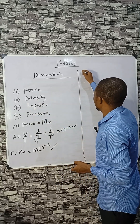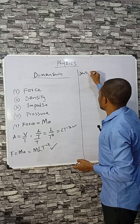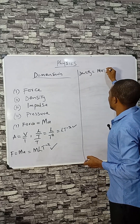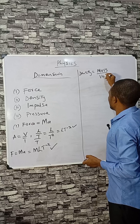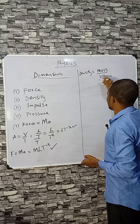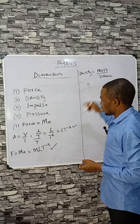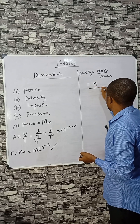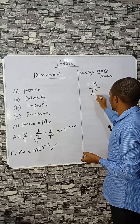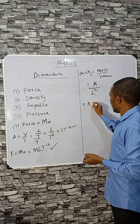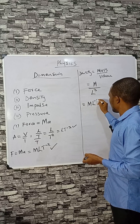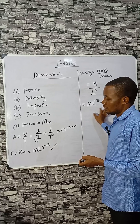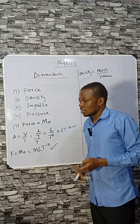Let's check density. Density is mass upon volume. Mass is M, a scalar quantity, and volume is L³. So we can express density as ML⁻³. We will consider these two examples in this video.